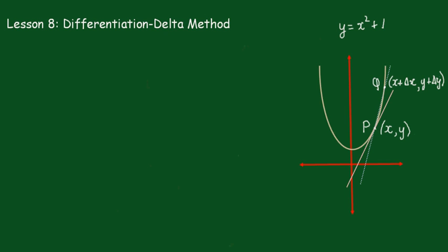Lesson 8: differentiation from first principles using the Delta method. Remember earlier in Lesson 3 we differentiated from first principles using function notation. Here we're going to use a different notation because we'll need this notation to explain the next rules which you will be following.